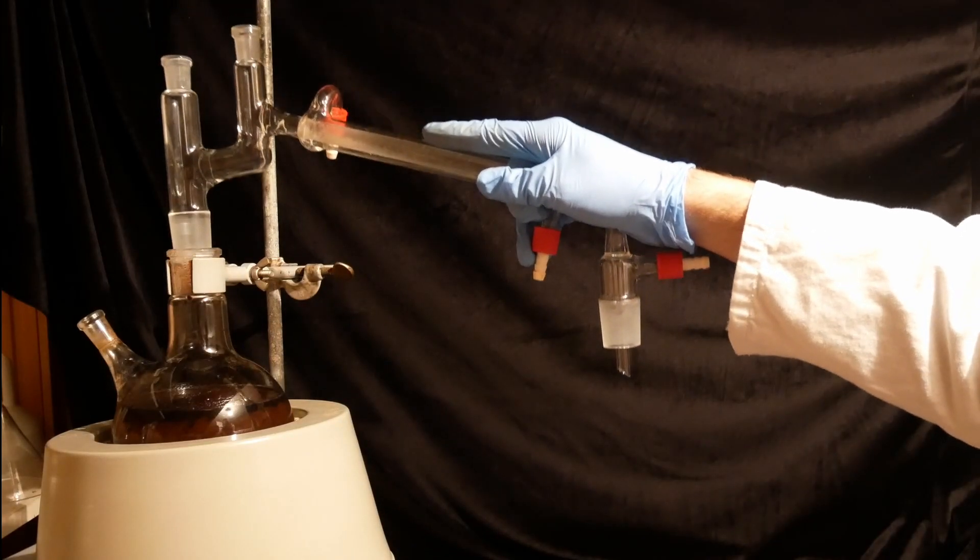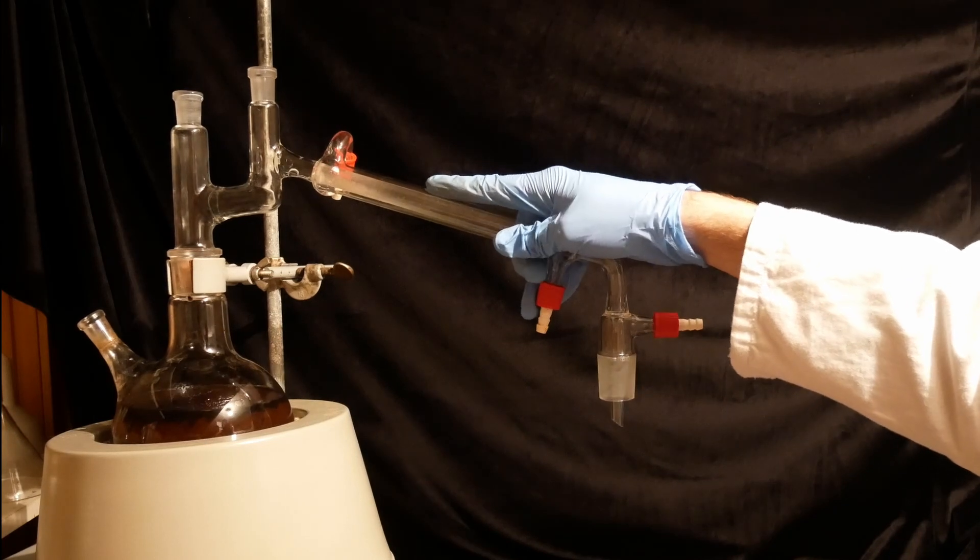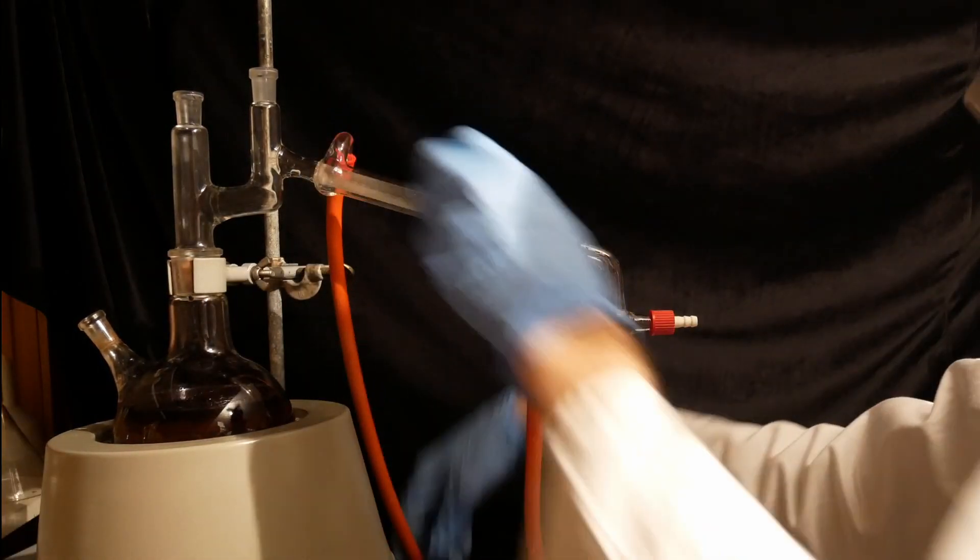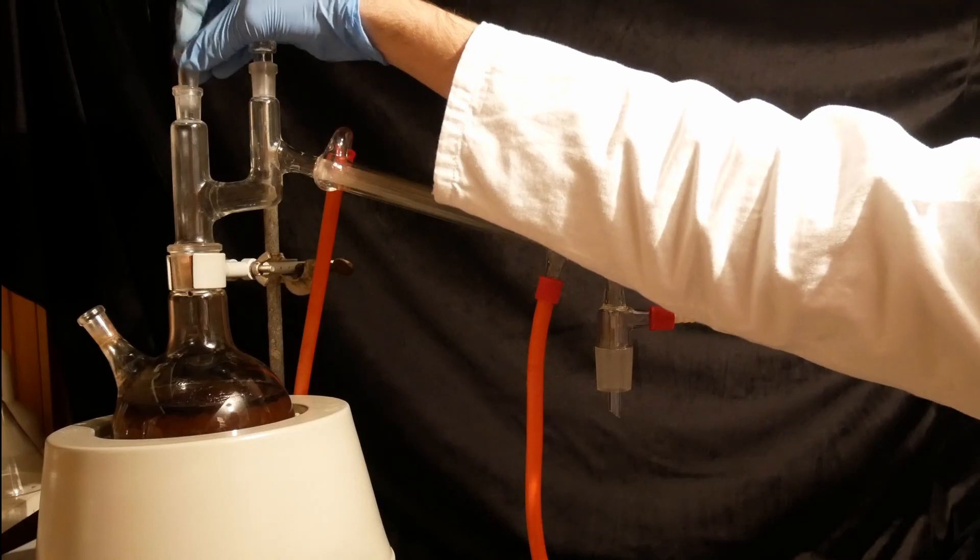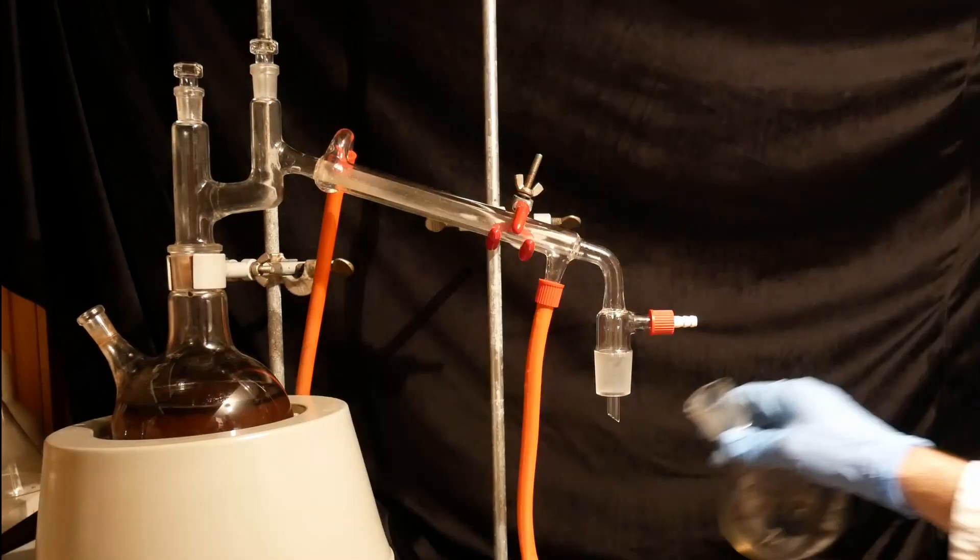Removing the aniline from the crude is quite simple, as it co-distills over with water, so I just assemble a simple distillation setup and boil the mixture to steam distill out the aniline.